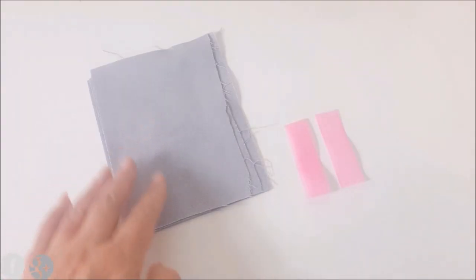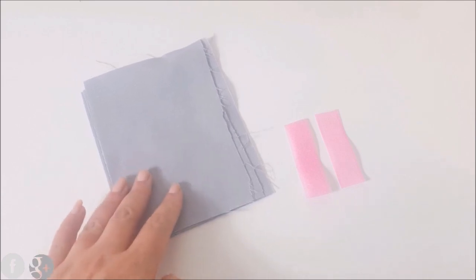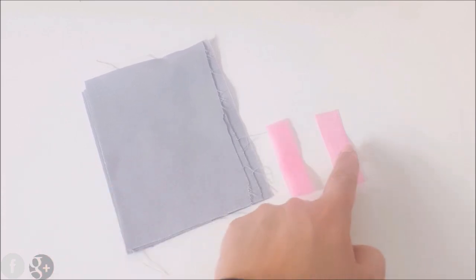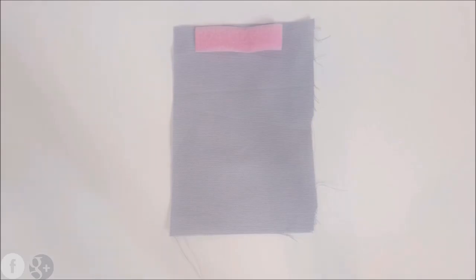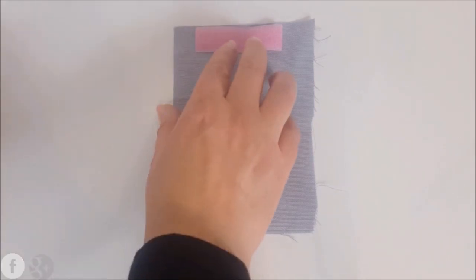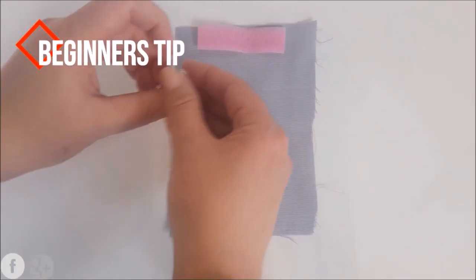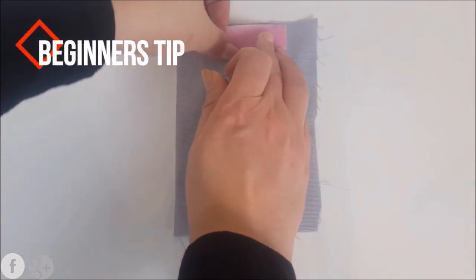So here I have my scrap piece of fabric and my two pieces of velcro. This is my hooky part and this is my soft furry part. I'm going to start with the furry part first and I'm just going to clip it into place so it doesn't move on me.